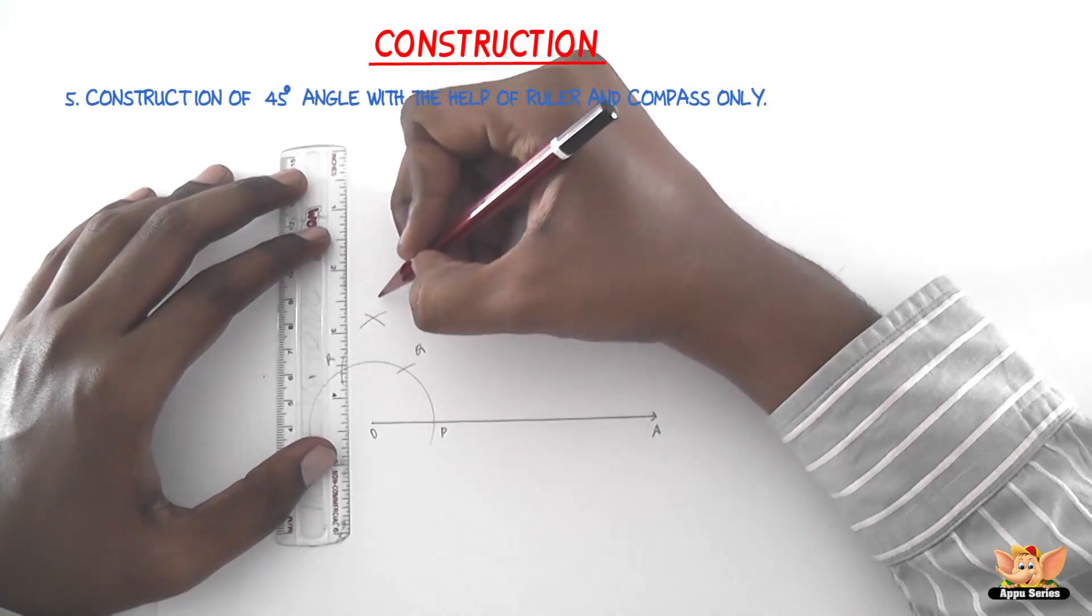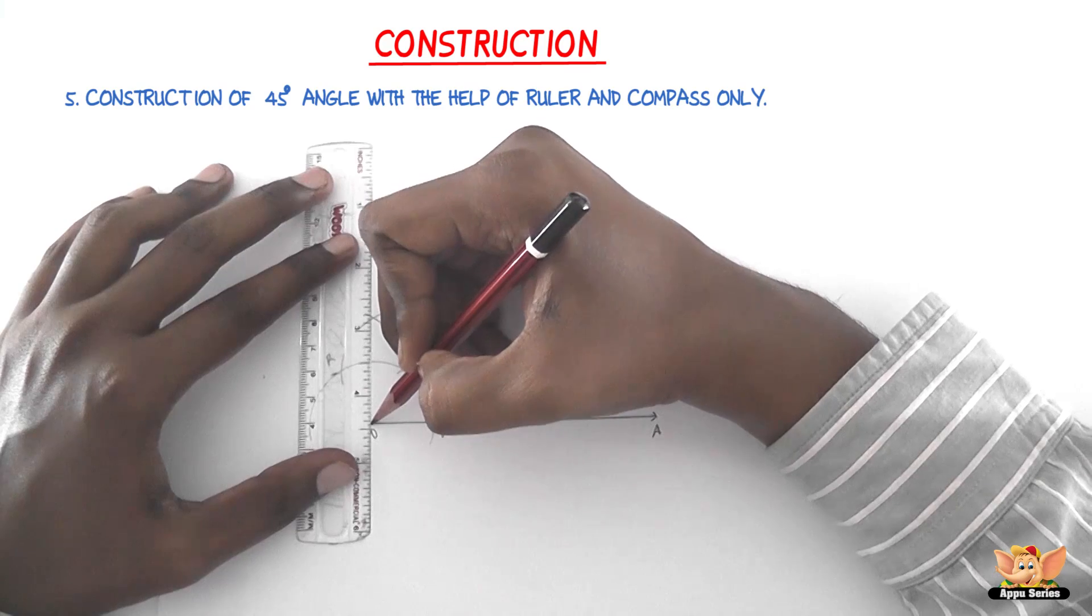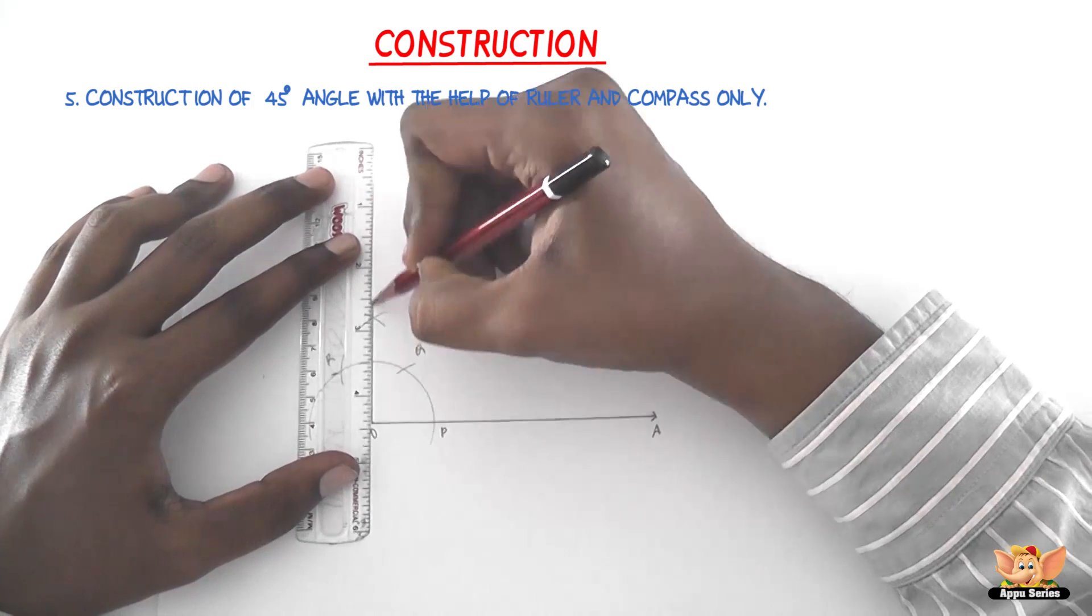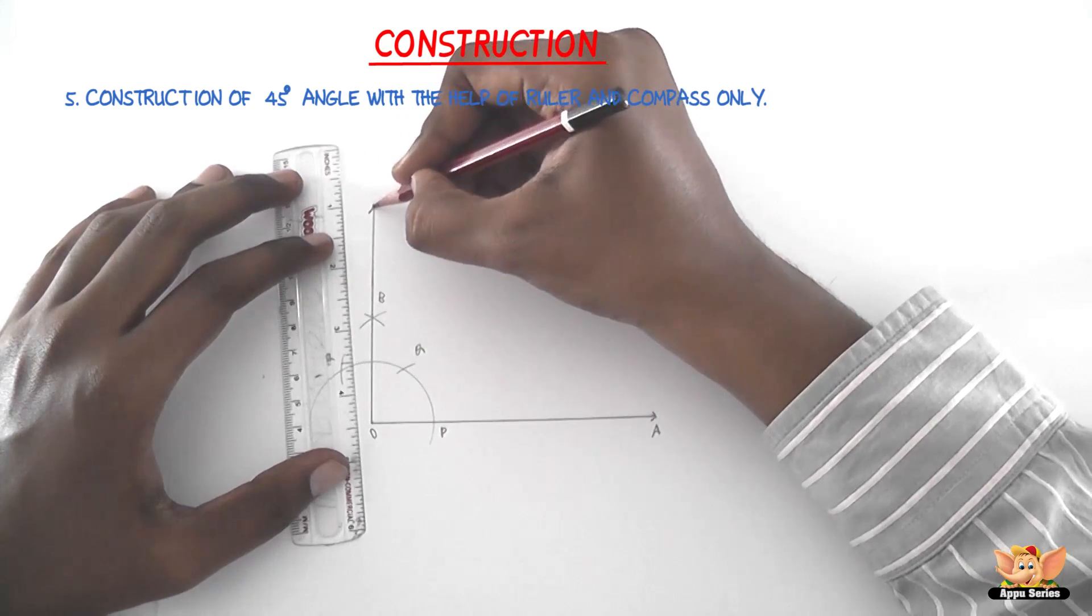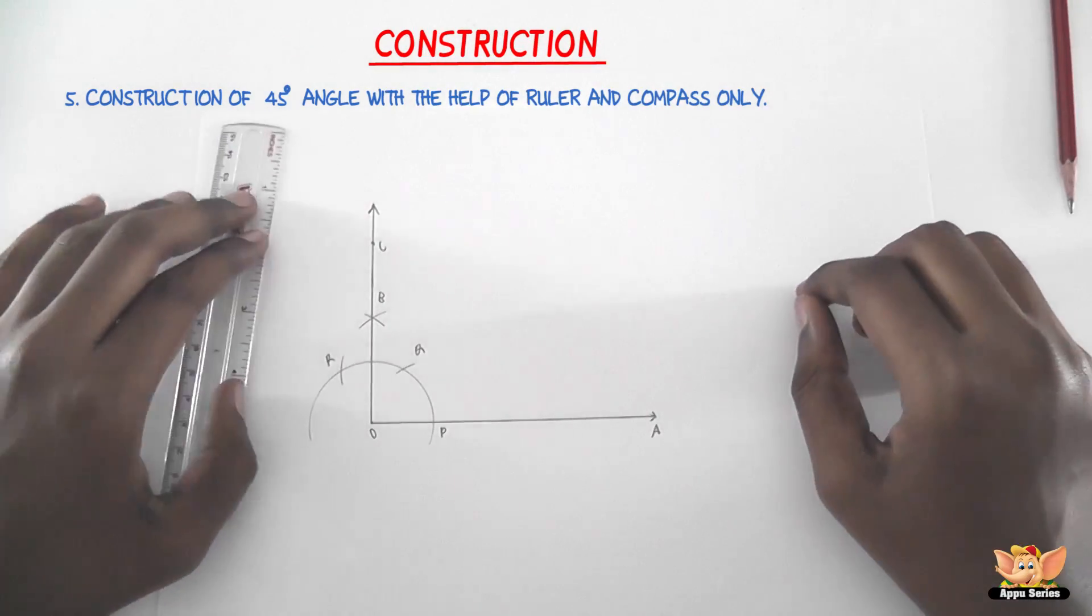Name this point as B and the final step to construct a 90 degree is to join the points O and B and produce it to C. So the angle AOC so obtained is a measure of 90 degrees.